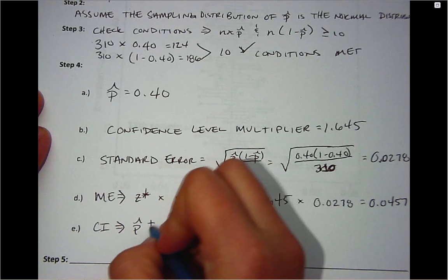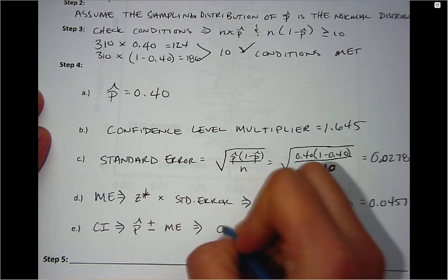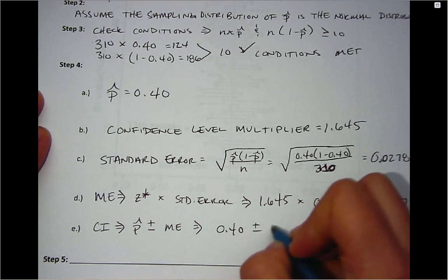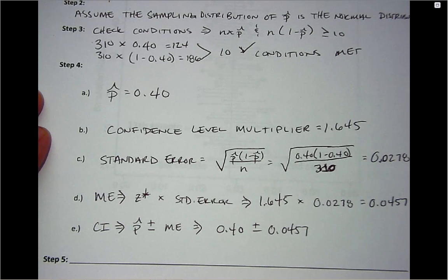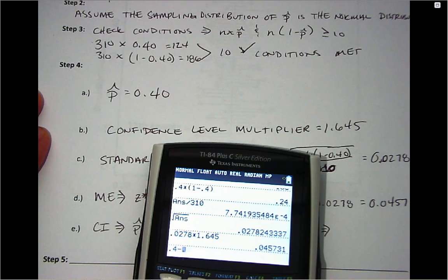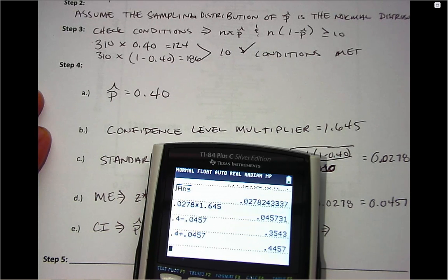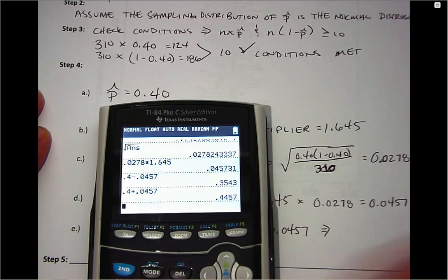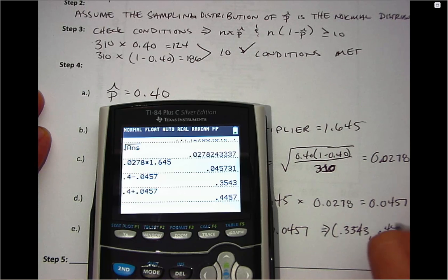So we have P hat plus or minus margin of error. P hat is 0.4 plus or minus and we have a margin of error 0.0457. So you would want to subtract first, and then add. So I get an interval that will range from 0.3543 to 0.4457.